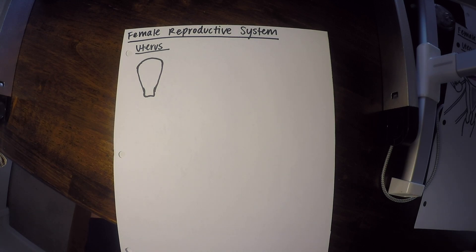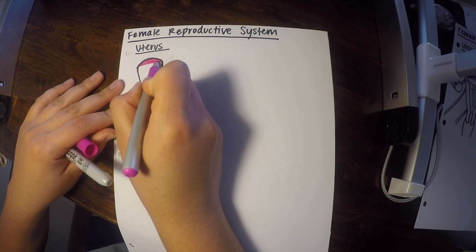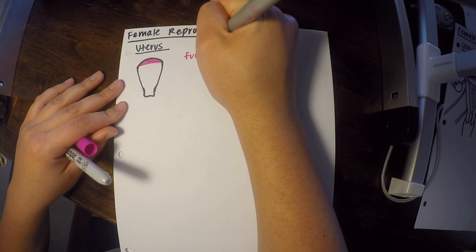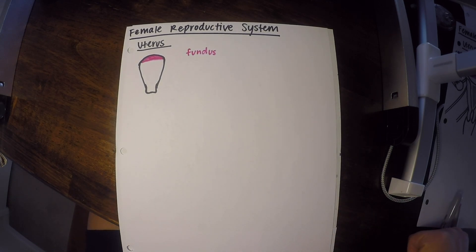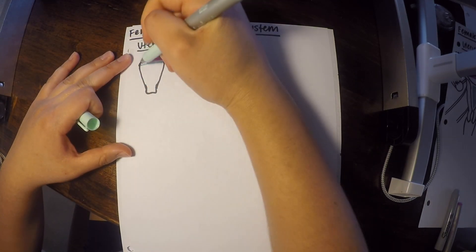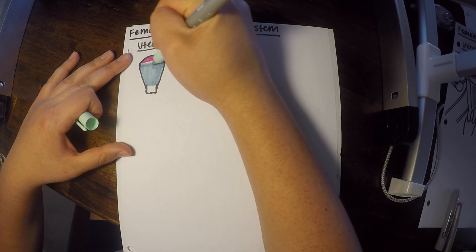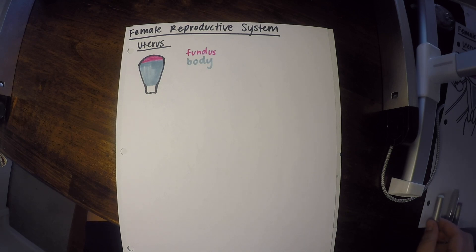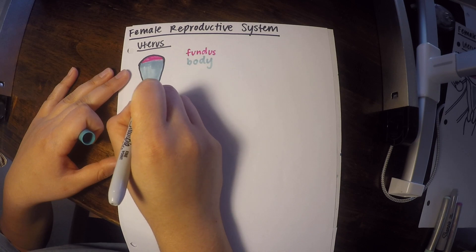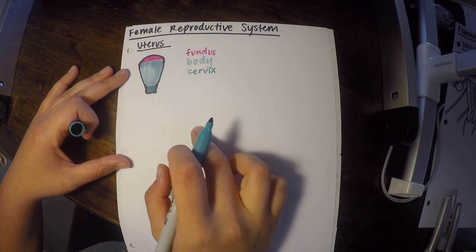This is what our uterus looks like — just a small one to label the different parts. The top part of the uterus is called the fundus. Then we have the body of the uterus, which is the bulk of it. And then we have the cervix, which is the lowermost part.